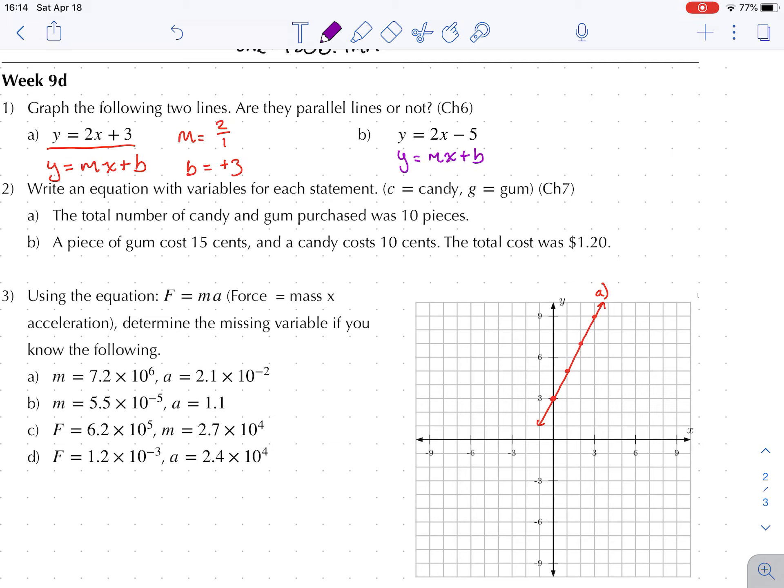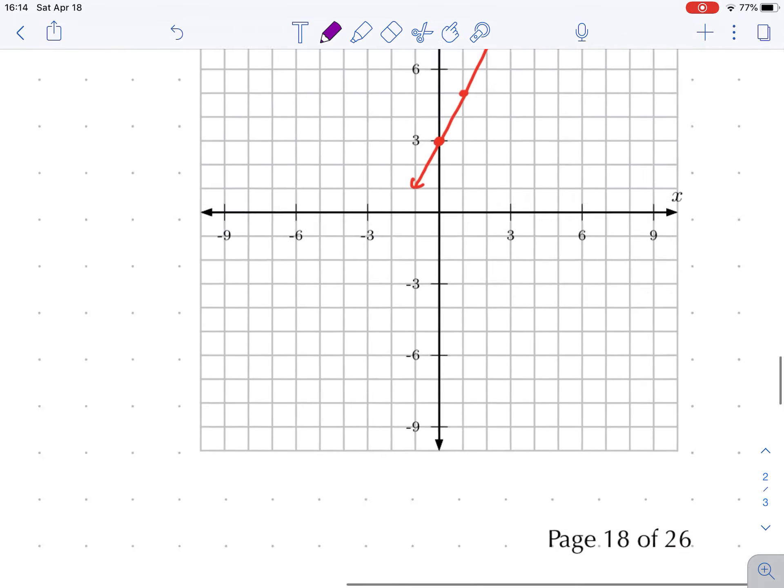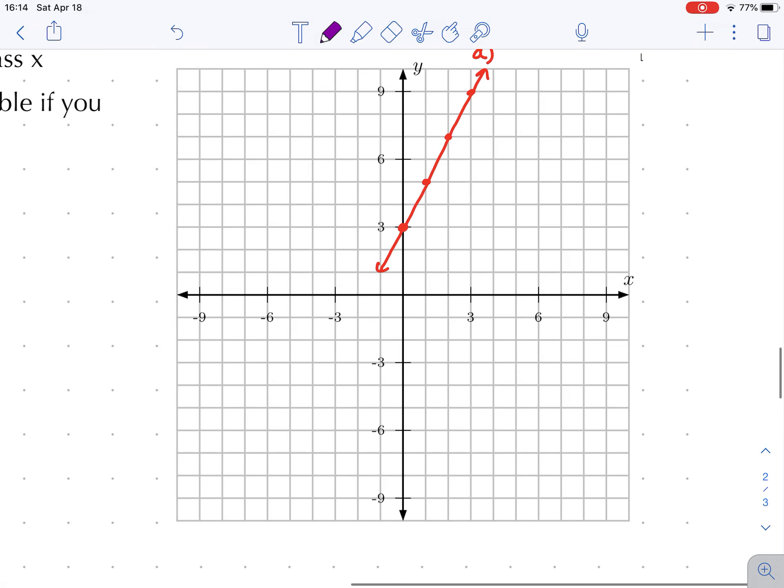Well, will you look at this - our second one's also in y equals mx plus b form. Very nice. Only this one starts at minus 5, it has a slope of 2. So what does this one look like? It starts down here at minus 5, it goes up 2 over 1, up 2 over 1, up 2 over 1.